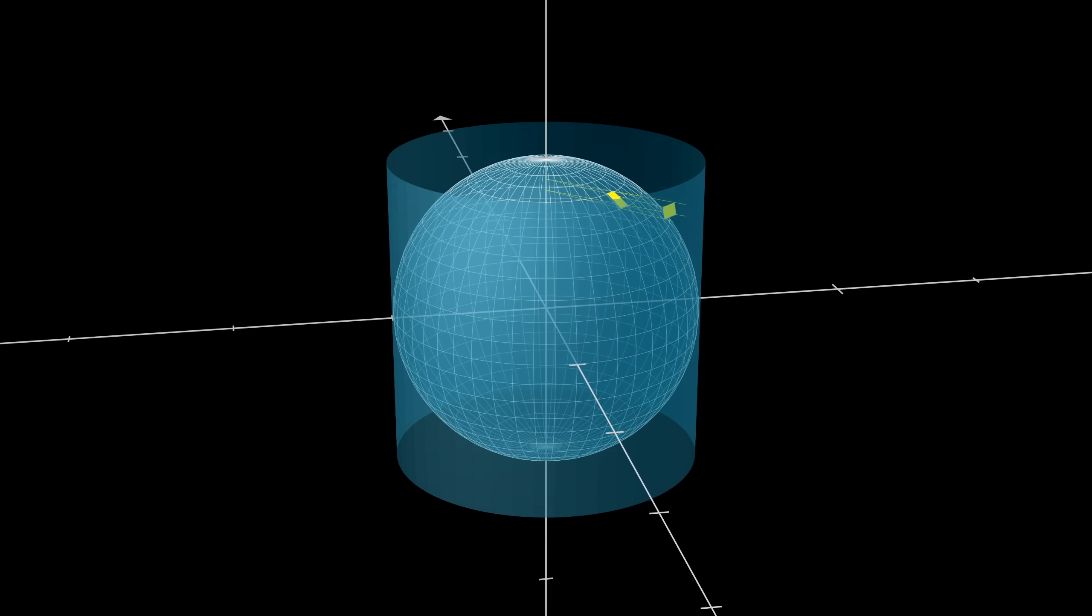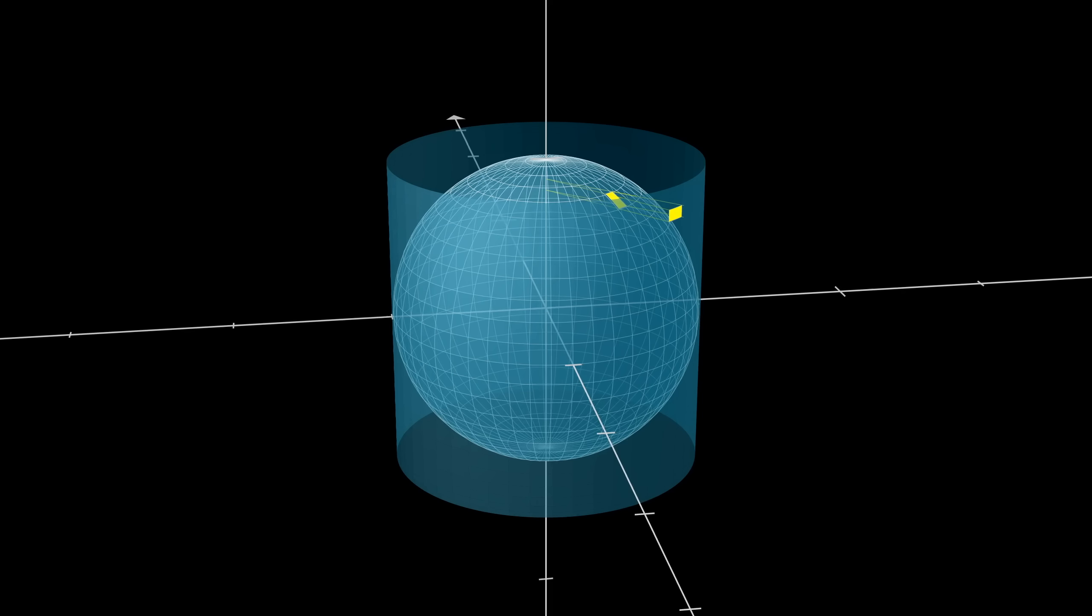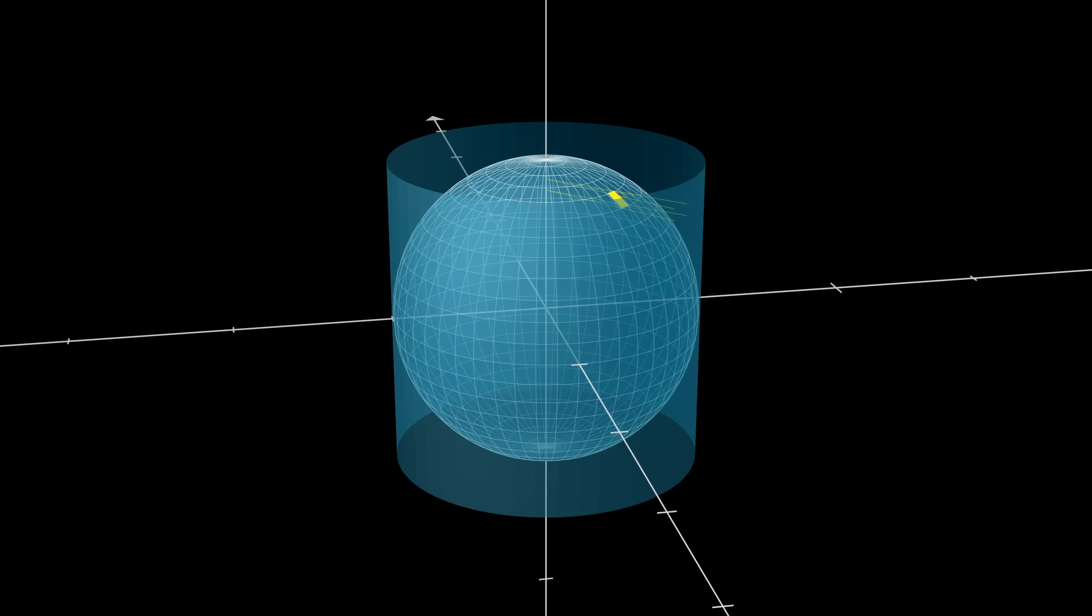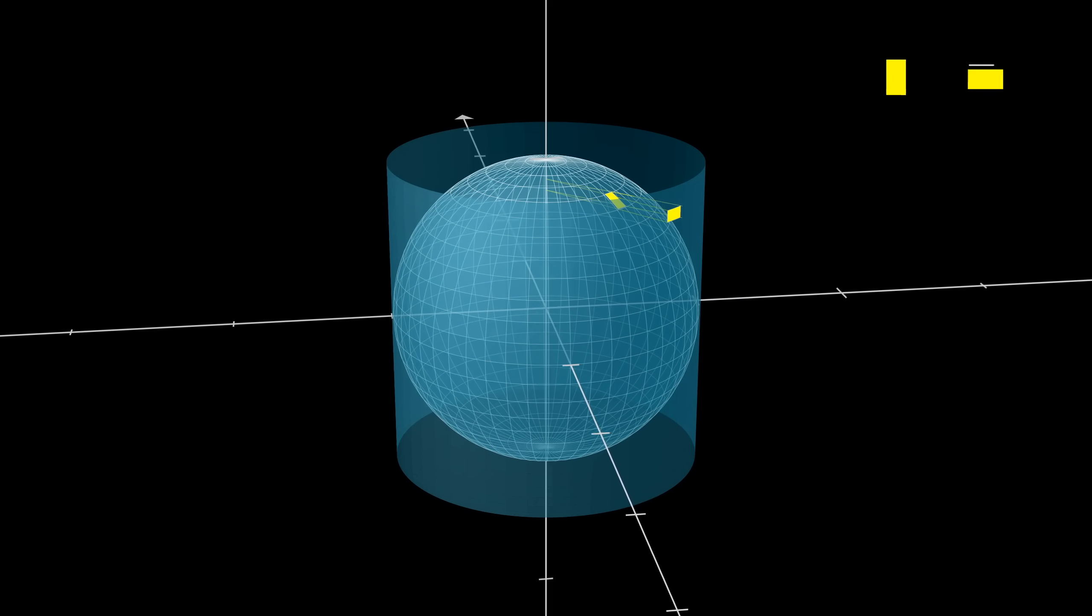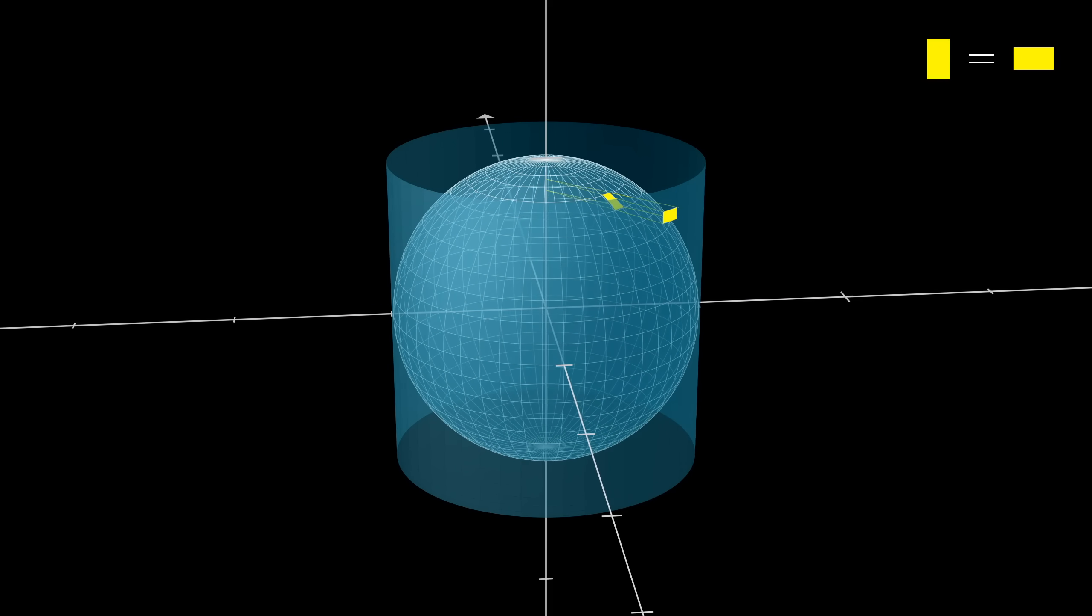And to show how if you project these rectangles directly outward, as if casting a shadow by little lights positioned on the z-axis, pointing parallel to the xy-plane, the projection of each rectangle onto the cylinder, quite surprisingly, ends up having the same area as the original rectangle.